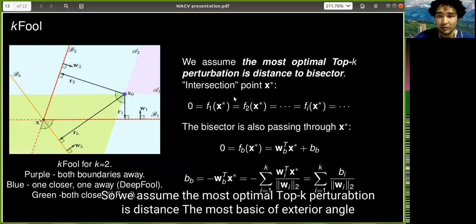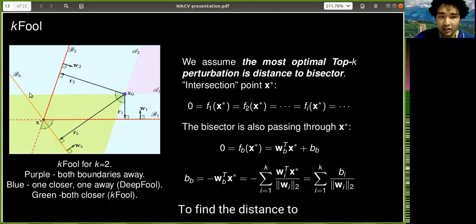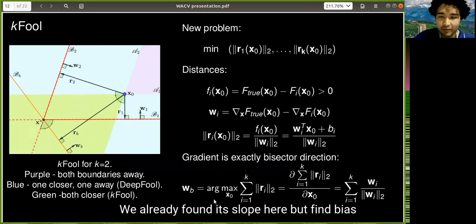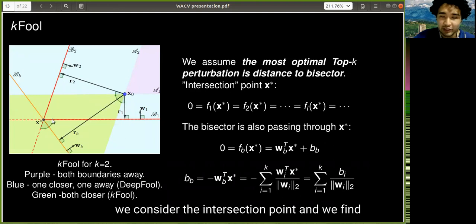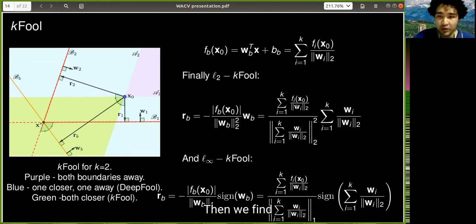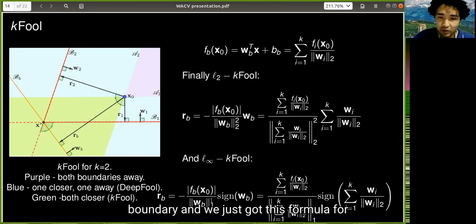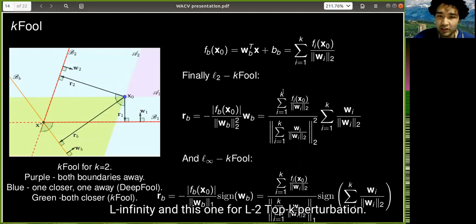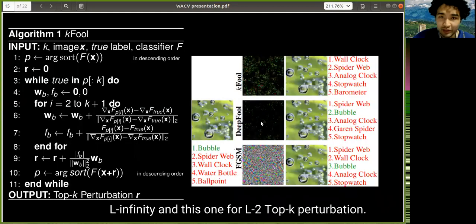So we assume the most optimal top-k perturbation distance to bisector line or the exterior angle. To find the distance to exterior angle, we need to find its slope and bias. We already found its slope here. To find bias, we consider the intersection point, and we find that the bias is this value. Then we find the distance to this decision boundary, and we got this formula for L-infinity and this one for L-2 top-k perturbation.